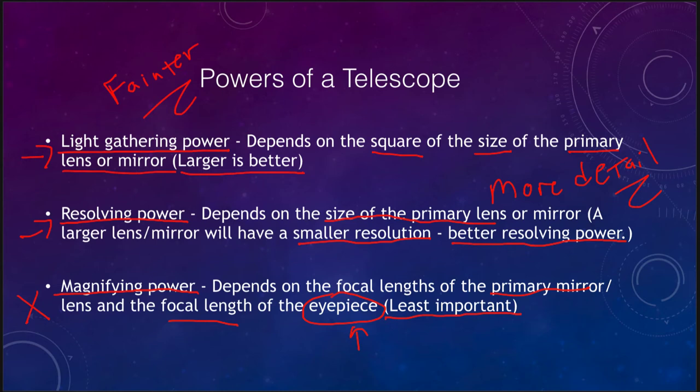If you're going to buy a telescope, look for the biggest one you can afford and that you would reasonably use — one that is easy to set up and put down so you'll actually use it. A telescope advertising only its magnifying power might not be the one you want.